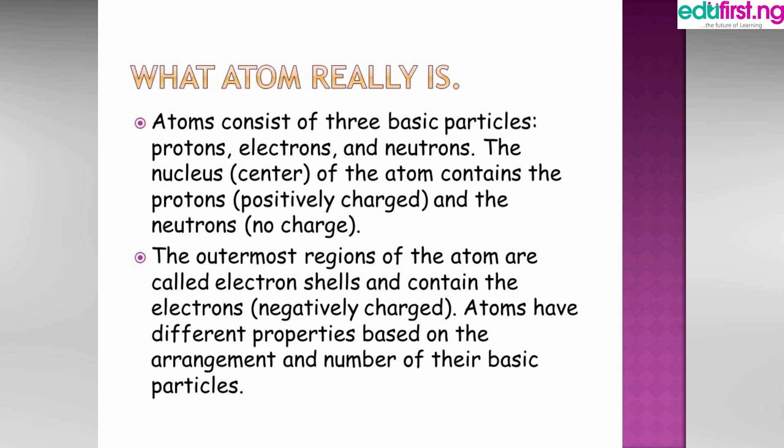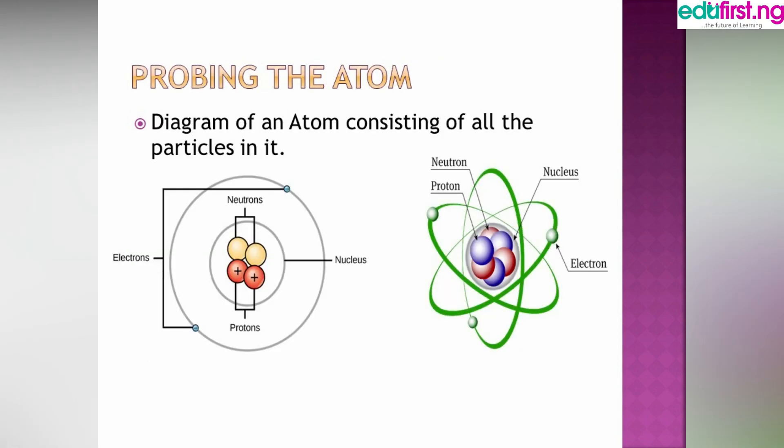Probing into the atom: these are the diagrams of an atom consisting of all the particles in it - the neutron, proton, nucleus, and the electron. The electron is orbiting, not at a still, but for explanation purposes you are seeing it as still.